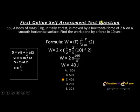This is the question from the first online self-assessment test. Many students are confused about this question, so I have made the solution for them. The question is: a body of mass 5 kg initially at rest is moved by a horizontal force of 2 Newton on a smooth horizontal surface. Find the work done by the force in 10 seconds.